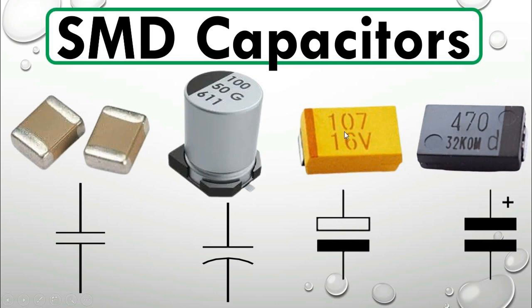Capacitors are crucial components in the creation of timing circuits, where the rate at which a capacitor charges or discharges determines the timing characteristics of the circuit. The combination of a resistor R and a capacitor C in an RC circuit results in a time constant, often denoted by the symbol tau, given by the formula tau = R × C.